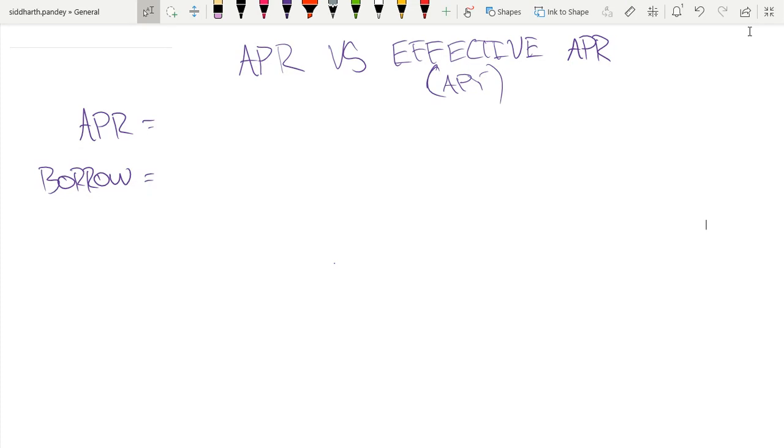Hello guys, what's up? I will be discussing APR versus effective APR. So APR just stands for annual percentage rate and effective APR, also known as APY, just stands for annual percentage yield.